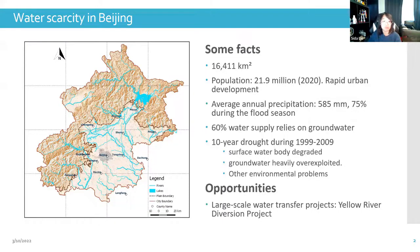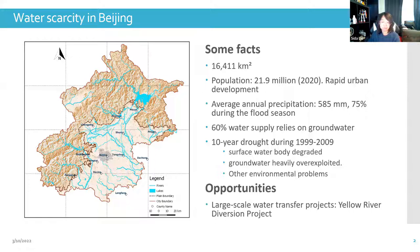60% of the water supply relies on groundwater resources. However, because of a 10-year drought from 1999 until 2009, the city's water resources have been overdrafted. The rivers were cut off, groundwater was heavily over-exploited, which also aroused other kinds of environmental problems in the city. The city was seeking a solution to this water scarcity problem.